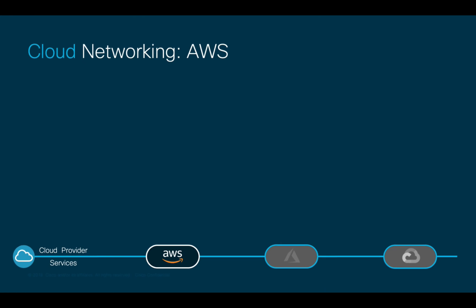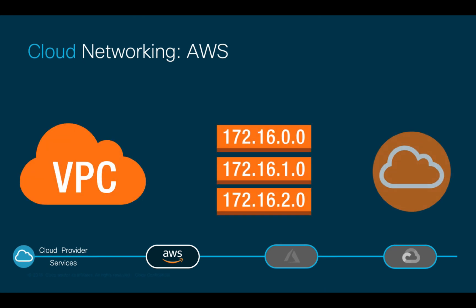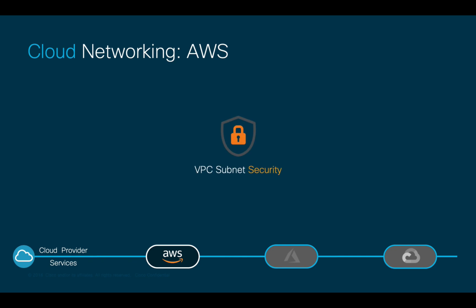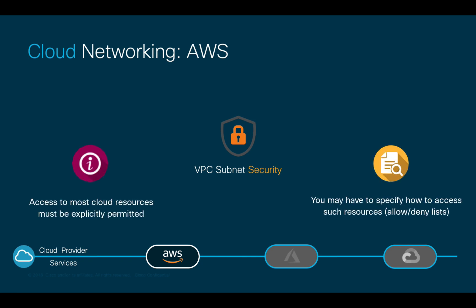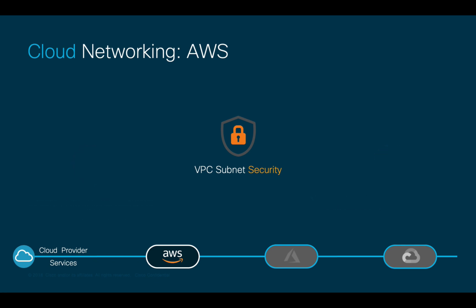In the cloud, it's not only about routing, CIDR, and subnets. Security is embedded by default following a policy model, which is very similar to Cisco ACI. This means that you must explicitly grant access to your cloud resources, otherwise communication will not be allowed. In the case of AWS, there are two main ways to achieve segmentation and define policy between different segmentation groups. The most popular one is called security groups, which is similar to ACI EPGs.